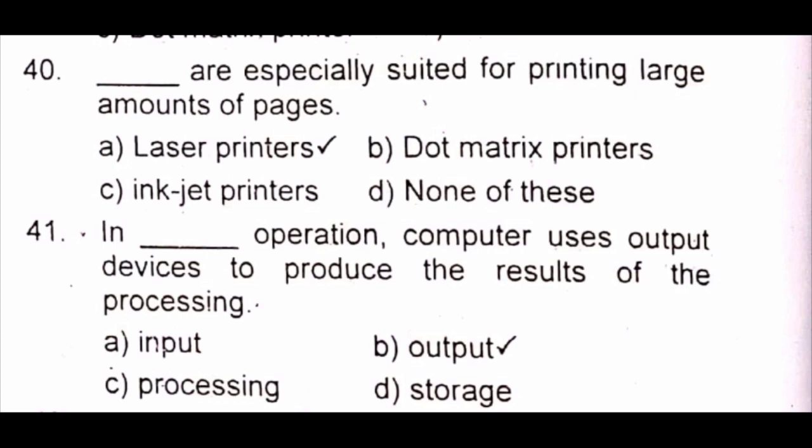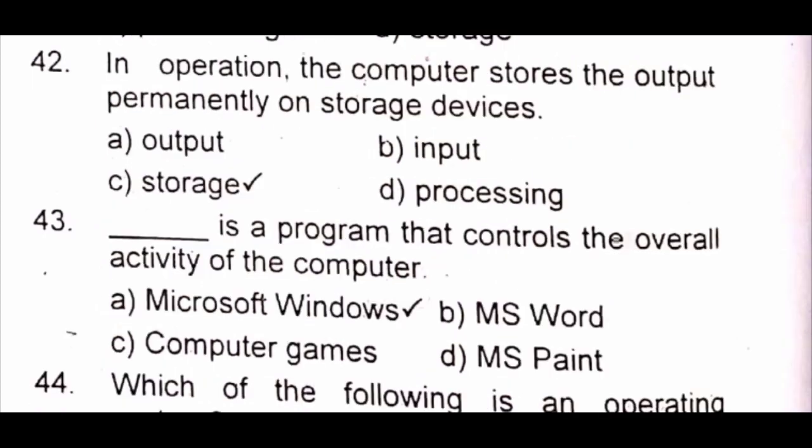Question 41: In dash operation, computer uses output devices to produce the results of the processing. A) input B) output C) processing D) storage. The answer is B) output. Question 42: In dash operation, the computer stores the output permanently on storage devices. A) output B) input C) storage D) processing. The answer is C) storage.